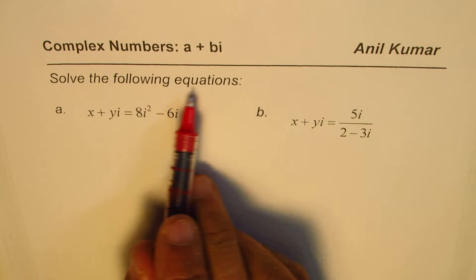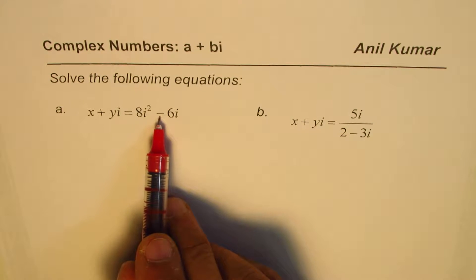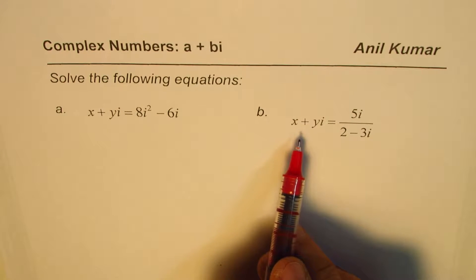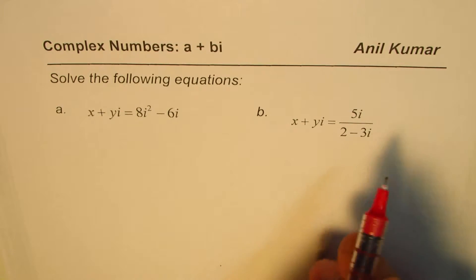The question is, solve the following equations: part a, x plus yi equals 8i squared minus 6i. The other one is x plus yi equals 5i divided by 2 minus 3i.